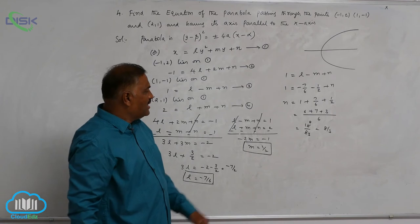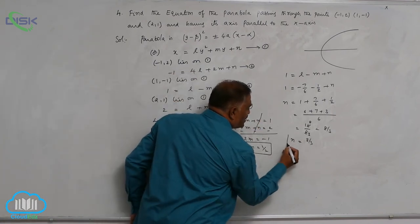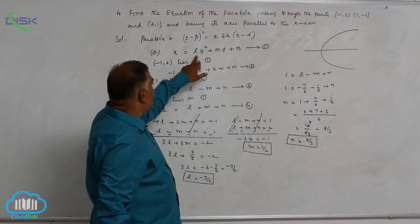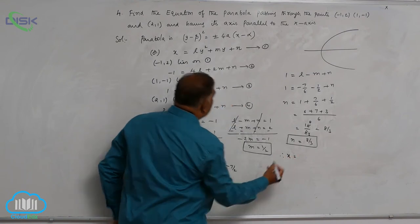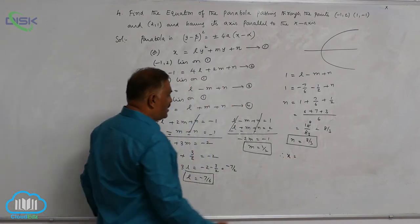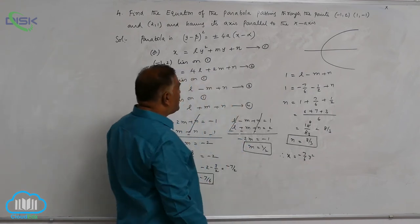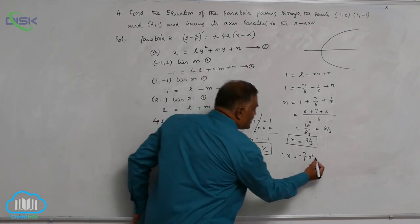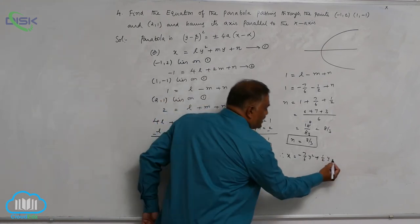Now, you can check all the values of l, m, n we got. So substitute these values in our equation 1. Therefore, x = ly², -7/6 y². Then comes my + 1/2 y + n + 8/3.